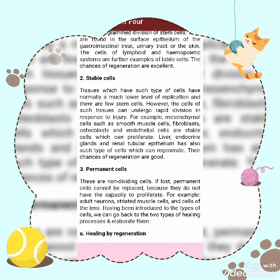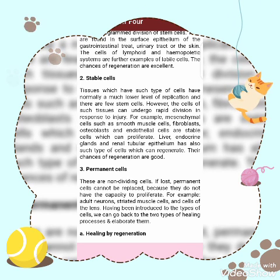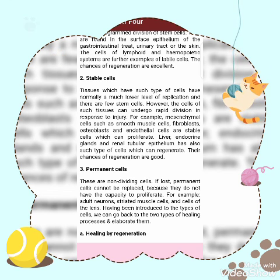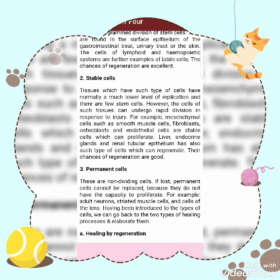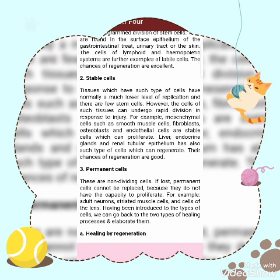The third type is permanent cells. These are non-dividing cells. Permanent cells cannot be replaced because they do not have the capacity to proliferate. Examples of permanent cells are adult neurons, cardiac muscle cells, and cells of the lens.